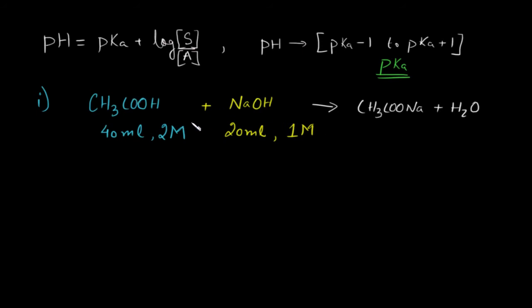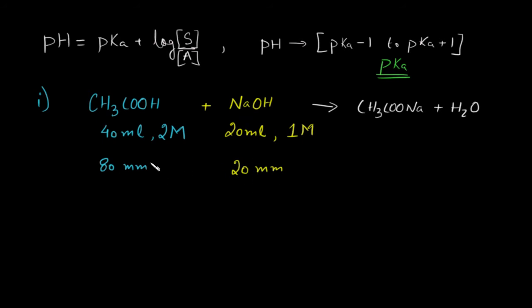We can see how much of each is available. For acetic acid, we have 80 millimoles available. Millimoles = molarity × volume in ml. NaOH has 20 millimoles. Since 1 mole reacts with 1 mole, 20 millimoles of NaOH will react with 20 millimoles of acetic acid. NaOH is the limiting reagent, so it will be completely consumed.